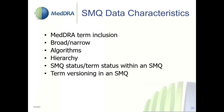SMQ data characteristics include: the types of terms included, the scope — narrow or broad — algorithmic SMQs designed to accommodate combinations of terms from more than one group, and hierarchical relationships. Each SMQ, including its subordinate LLTs and PTs, has an assigned status of either active or inactive. SMQs are constructed generally at the PT level relating to a particular defined medical condition or area of interest. When a PT is included, all subordinate LLTs are also included in that SMQ.